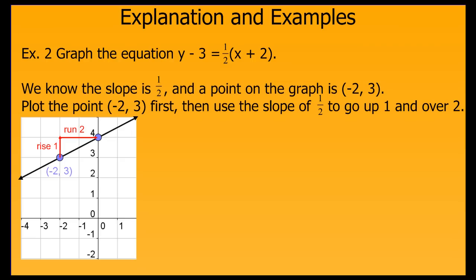Now that we have a point and the slope, we can graph the equation. First, we plot the point negative 2 comma 3. Then we use our slope of one-half to go up one and over two to get a second point. We then connect the points with a straight line, add arrows to the end, and we've now graphed our line.